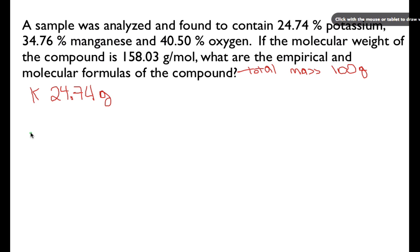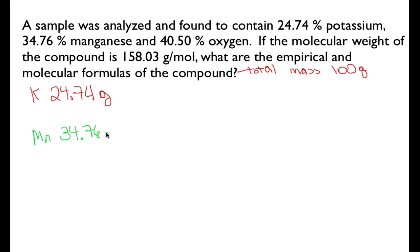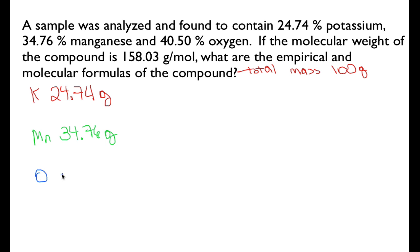If 34.76% of a 100-gram sample is manganese, then we know we have 34.76 grams of manganese. And we can do the same thing for oxygen: 40.50% of a 100-gram sample means we have 40.50 grams of oxygen.